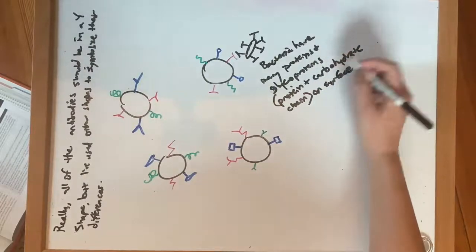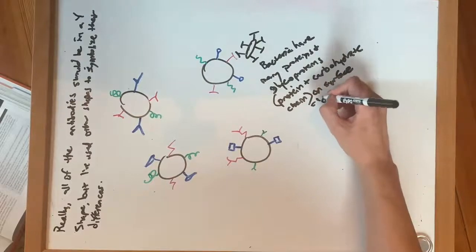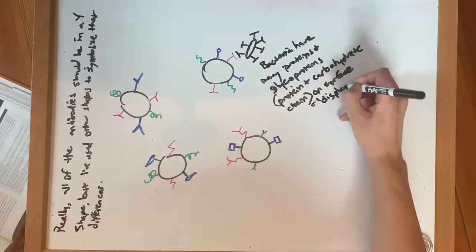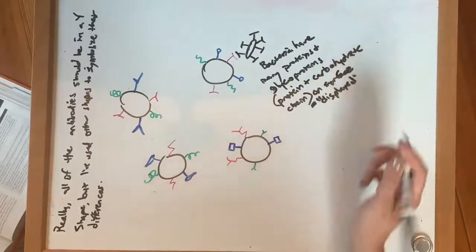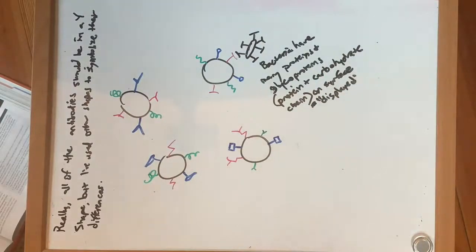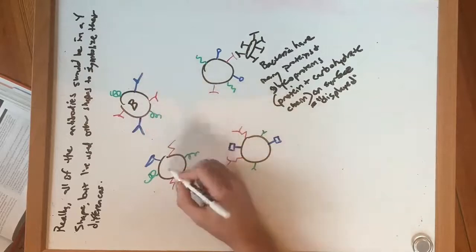And so they display these and really, it's just that they exist on the surface of the bacteria or the virus or whatever it may be. And then the immune cell can bind to it. And so specifically, these guys are B cells.